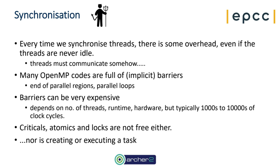Next is synchronization. Every time we synchronize threads there is some overhead, even if the threads are never idle, because in order to synchronize, threads must communicate somehow through the memory system. All synchronization is really just memory accesses of some sort at the bottom level. Every time we execute a barrier, even if all threads arrive at exactly the same time, it takes a certain amount of time for the barrier to execute before threads can proceed. OpenMP is designed with implicit barriers everywhere — every parallel region and loop has a barrier at the end. Barriers can be surprisingly expensive.